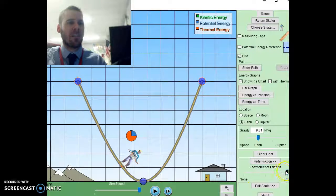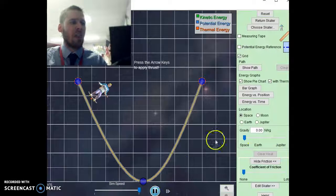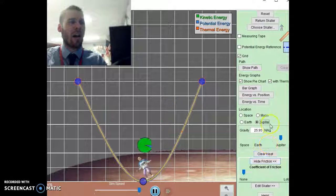A couple different things that you can mess around with for the simulation is you can change the location for which your skater is. That will change the gravitational pull: outer space, the moon, Jupiter would increase your gravitational pull.